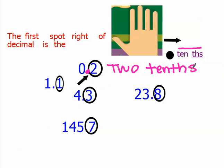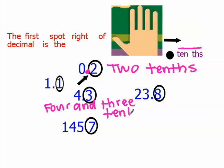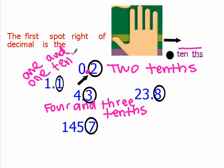Here we have 23.8 — one number to the right of the decimal, which is 8. We say 23 and — we always say 'and' for the decimal point — 8 tenths. Here we have 4.3, so we write 4 and 3 tenths. And here we have 1.1, so we say 1 and 1 tenths.